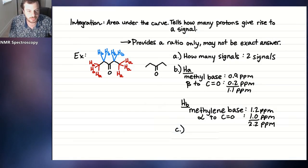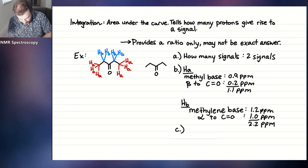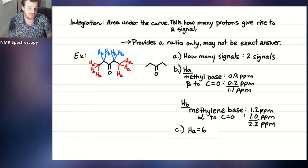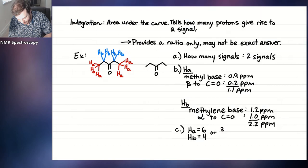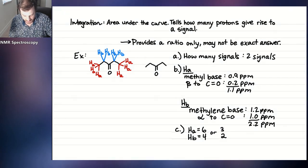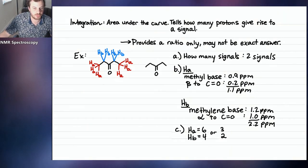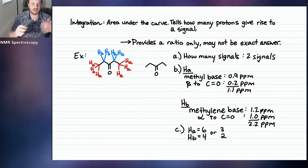So question one could be how many signals — two. Question two: what is the approximate chemical shift — 1.1 and 2.2 ppm respectively. The third question I could ask is the integration. For HA the integration would be six, because there are six HA protons. For HB it would be four. Keep in mind it's only a ratio, so six to four, or equivalently three to two, are both acceptable answers. Integration is only a ratio.